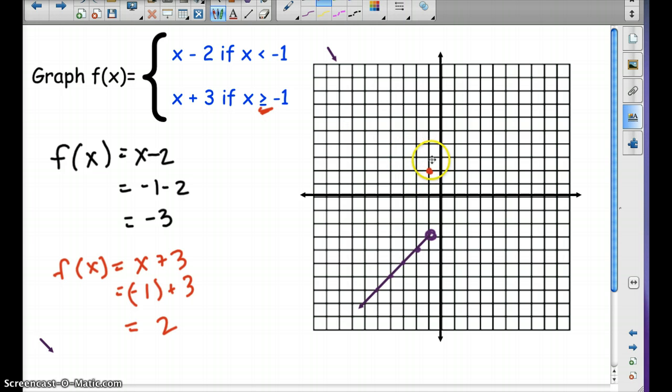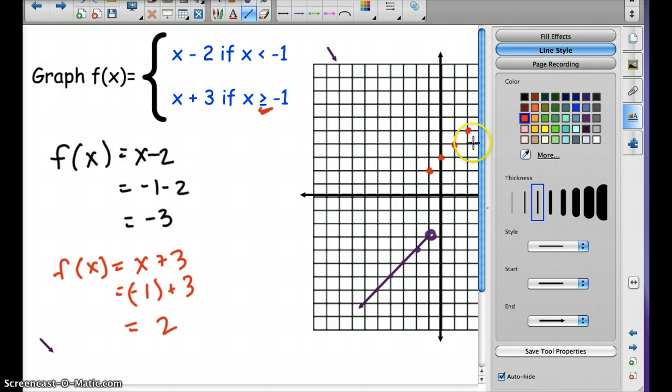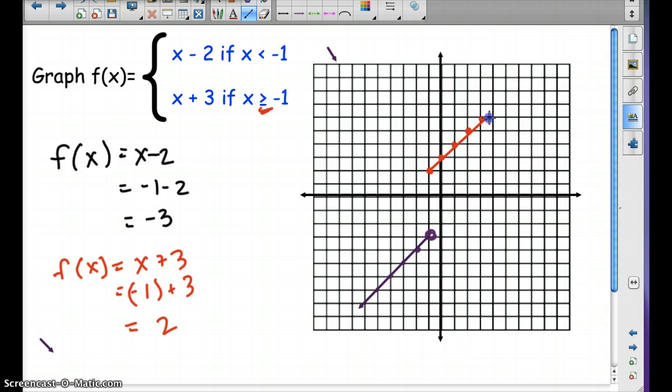So for this one, then, we're going to go up to 2. And this one's going to be a solid dot because it's greater than or equal to. And again, our slope is up 1 to the right 1. So I'm going to make dots here. And then we can make our line. So that is our piecewise function. We see a gap here.